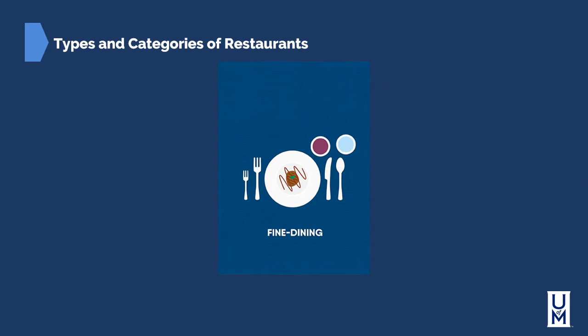Fine dining restaurants run the spectrum from the low end — some casual dining restaurants like steakhouses fall into this category — to the high end. Typically fine dining requires a specific dress code and reservations. Fine dining can also include what we know as uber fine dining, the extreme high end, with very fancy restaurants that require jackets and ties for men and dresses or pantsuits for women.